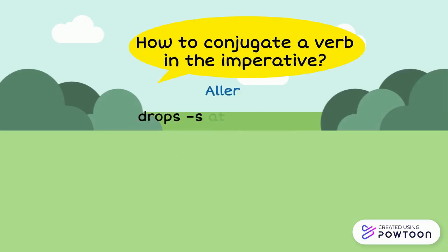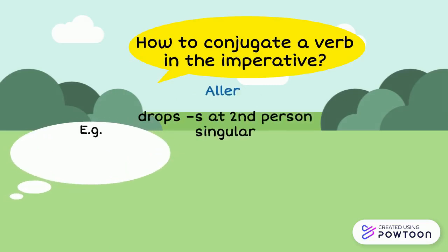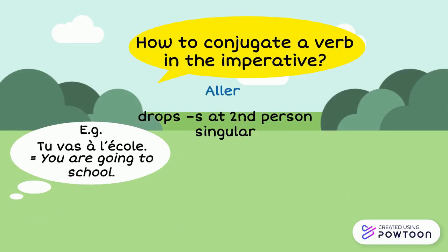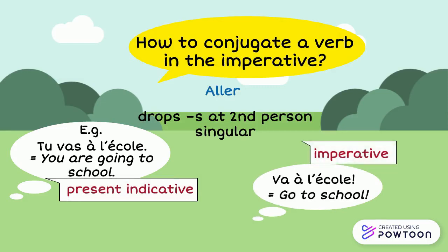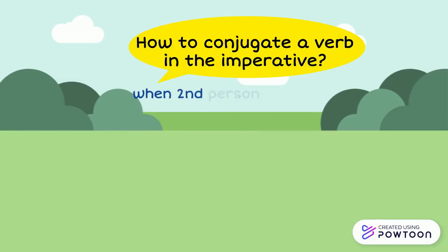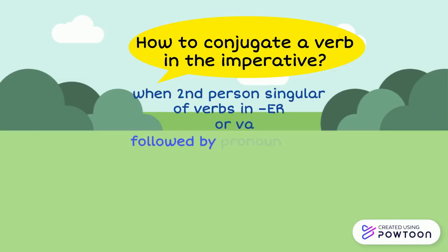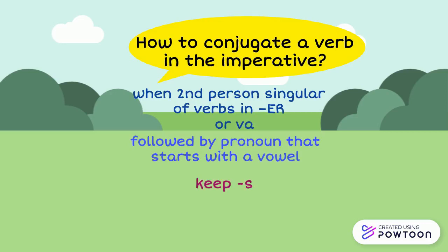'Aller' also drops the S at the second person singular. For instance: 'Tu vas à l'école' — you are going to school. This is the present indicative. 'Va à l'école' — go to school. This is the imperative. However, when the second person singular of verbs in ER or 'va' is followed by a pronoun that starts with a vowel, we keep the S.